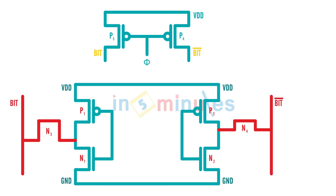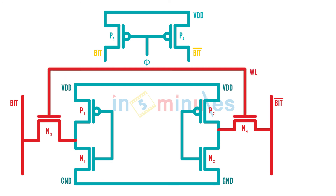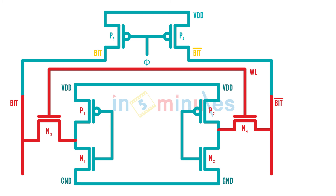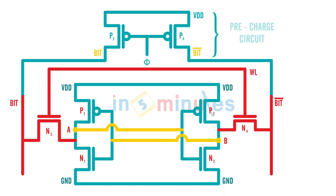This is the bit line and this is the bit bar line. We remember that the inputs were both shorted — I'm calling both of them 'word line,' so they are internally shorted. The bit line is shorted here, and this is bit bar. We also need to make the cross-coupled connections. This is my pre-charge circuit — when phi is equal to zero it makes bit and bit bar go to VDD, which we need for the read operation.